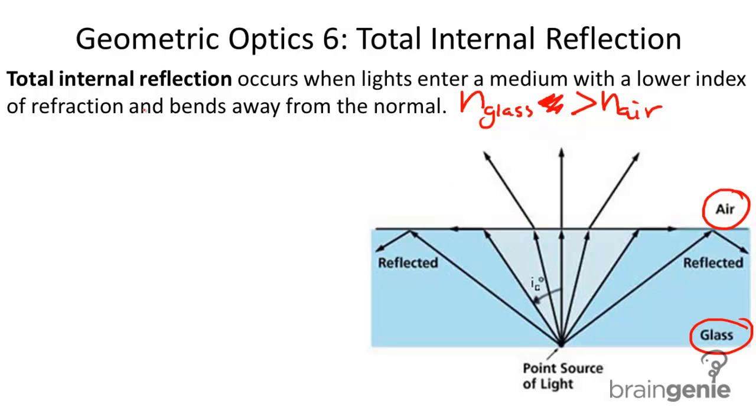In this case, the light bends away from the normal, as you can see here. Here we have the normal, and you see light bending away from it.